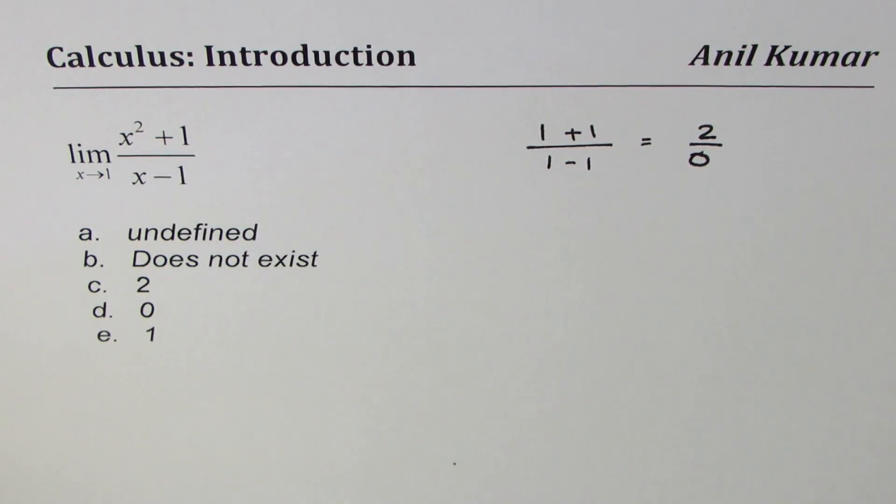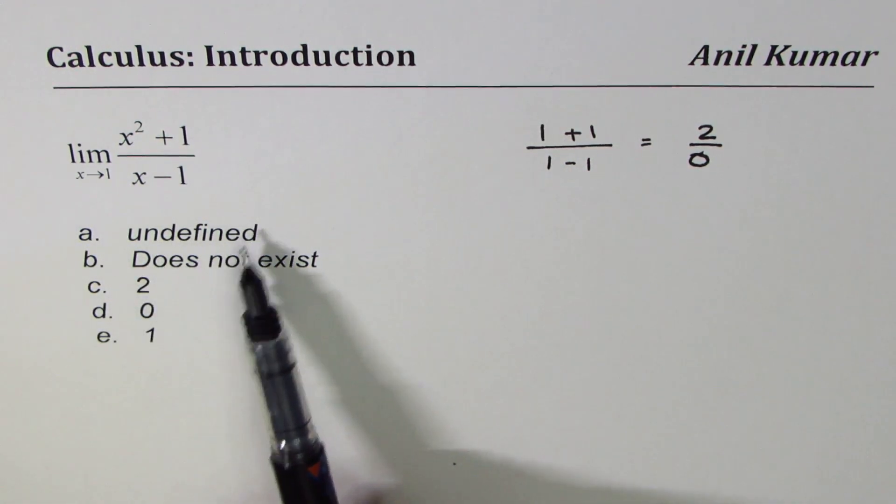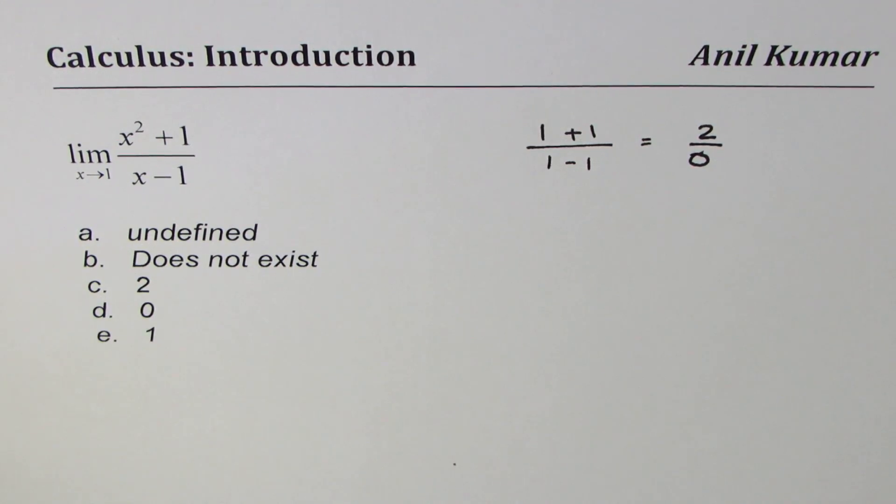So in this particular case, what is the choice? Is the limit undefined or it does not exist? Now these two terms are very confusing and that's the reason of my taking up this particular example.